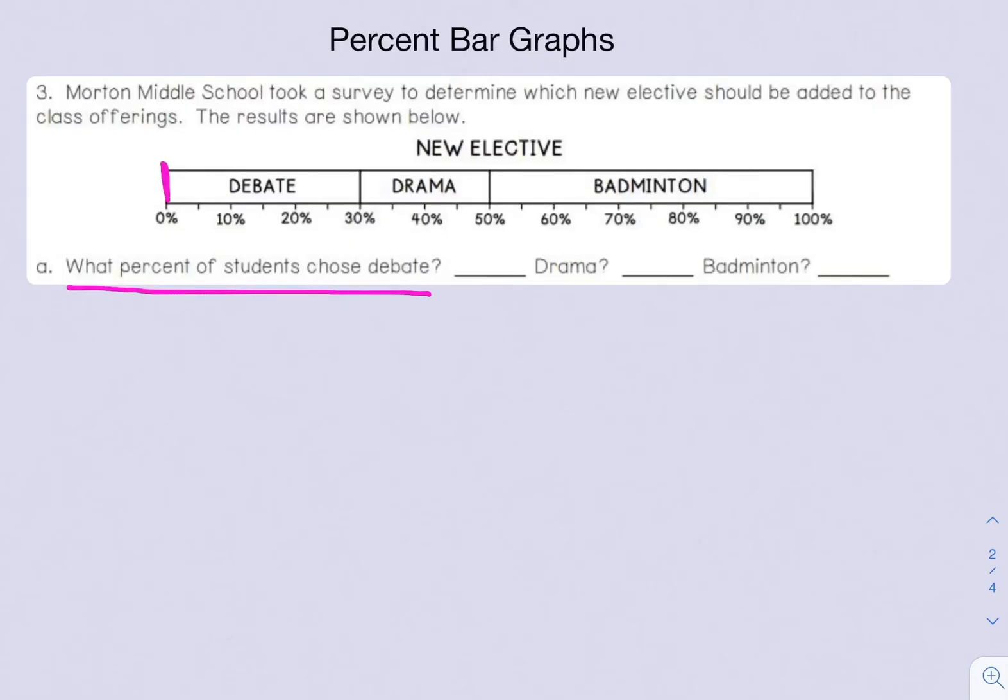Debate is our first section. It starts at zero percent and ends at 30 percent. So 30 percent of students said that debate should be the new elective.